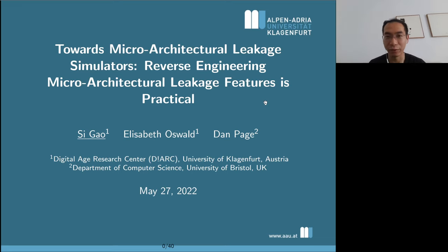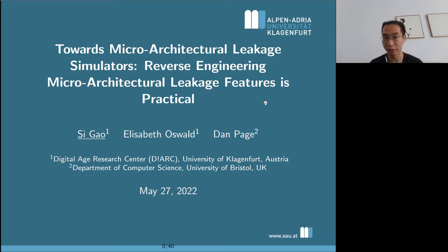In my last talk I discussed how to construct complete leakage models, and how most existing tools have leakage models that are far from complete. In this talk I'm going to discuss how you can reverse engineer the microarchitecture features from a Cortex M3 core and make your leakage model a bit better — a bit more complete — compared to all existing tools.